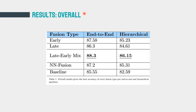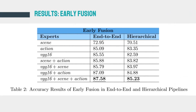These are the accuracy results for early fusion. The best-performing early fusion model uses the combination of VGG16, scene, and action experts with the end-to-end pipeline, scoring an accuracy of 87.58%. OpenPose and YOLO experts are omitted here because they are end-to-end components that only provide late features. The highest accuracy for VGG16 alone is 85.55%, while adding scene and action semantic features improves accuracy by nearly 2.03% to 87.58%.